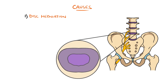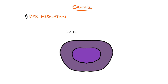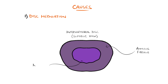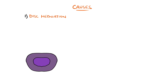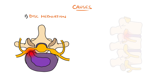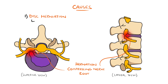These discs are made up of the nucleus pulposus, a gelatinous substance in the centre, surrounded by the annulus fibrosus. In herniation, the nucleus pulposus herniates through the annulus fibrosus, with 90% of cases happening at L5-S1.